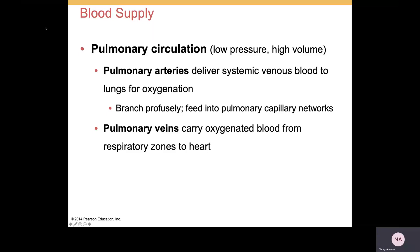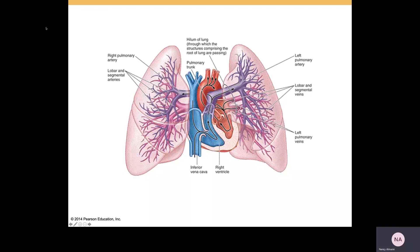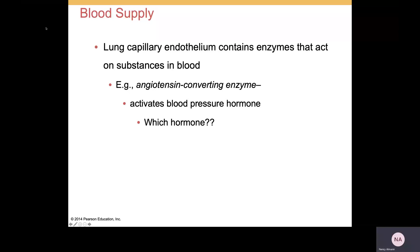Regarding blood supply, pulmonary arteries deliver deoxygenated blood to the lungs for oxygenation, branch profusely, and feed into pulmonary capillary networks. Pulmonary veins return oxygenated blood from the respiratory zones to the left atrium. Additionally, the lung capillary endothelium contains enzymes that act on substances in the blood, including angiotensin-converting enzyme — the ACE enzyme — which activates a blood pressure hormone.